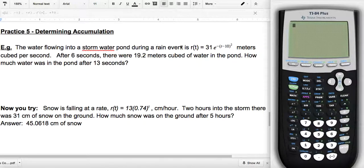The water flowing in a stormwater pond during a rain event is meters cubed per second. So I know that's a rate because it's meters cubed per second. After six seconds there were 19.2 meters cubed of water in the pond. How much water was there in the pond after 13 seconds? Okay, so let's think about this.